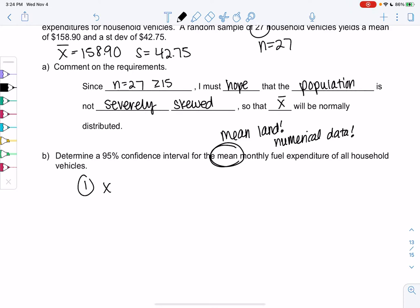We already have x̄ and s and n. You probably wrote those above. So $158.90 is x̄, $42.75 for s, and n is 27.